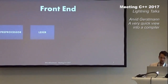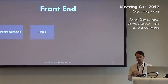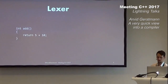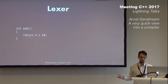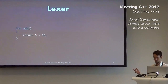Next we have the Lexer. The Lexer splits our source code into tokens — snippets of text categorized into different predefined categories like identifier, literal, and punctuator. On the left we have a little snippet of C++ source code: a function adding two integers together. We're going to quickly go through how the Lexer would split that into tokens.